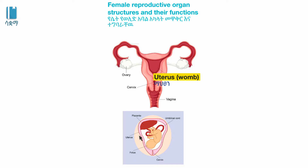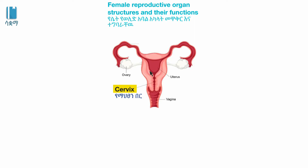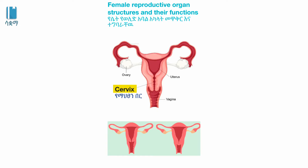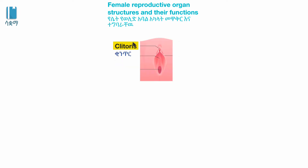The uterus, or womb, is a muscular structure and is the fertilization site. The cervix is part of the uterus and plays an important role in the menstrual cycle and childbirth.